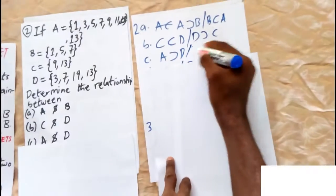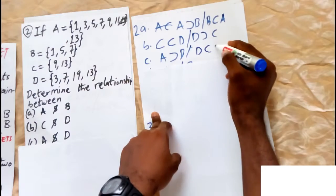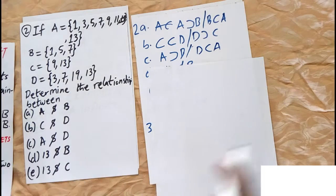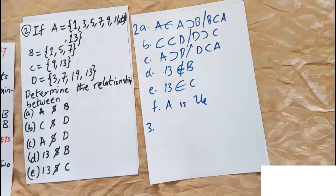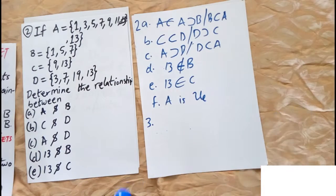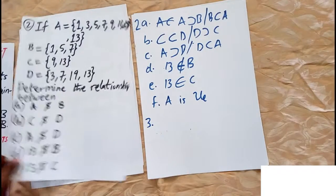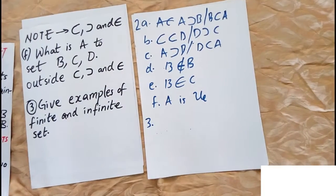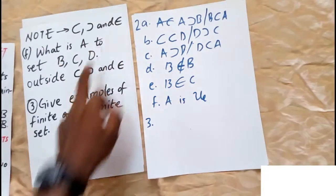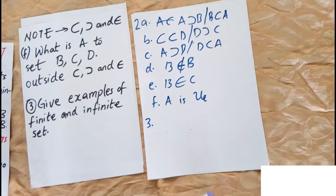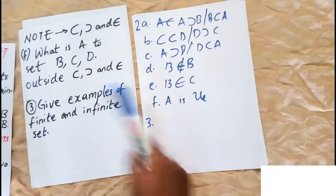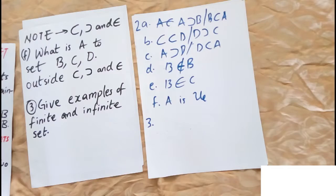For A and D: A is a superset of D, or D is a subset of A. Then, 13 is not an element of B, and 13 is an element of C. For the final part — considering the subset, superset, and element-of relationships — A relative to sets B, C, and D is outside those three relationships, making A the universal set.